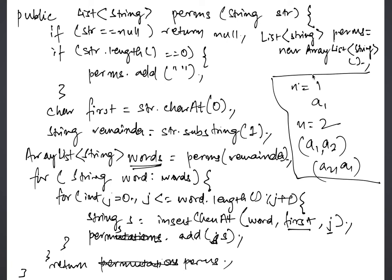So if we had a1, a2, a3, in the first recursive step we will have a1 as the first character. So when you are inserting, you will have just a1 here. So you will insert it for n equals 2.